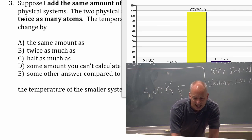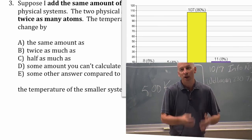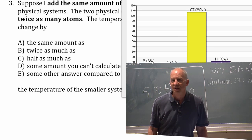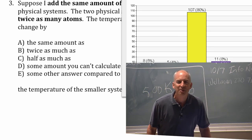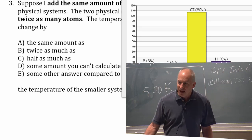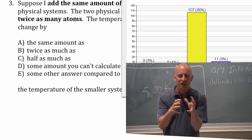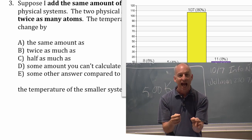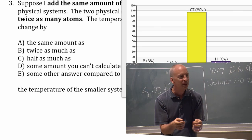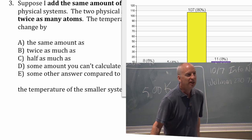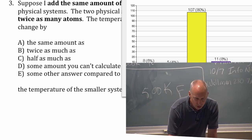Alright, so the dominating answer is half as much. A lot of you already know that the size of the system is really important. If I add the same amount of energy to half the size of the system, then each piece of that system, each atom or each molecule, gets twice as much of an energy change. And so its temperature will change twice as much.